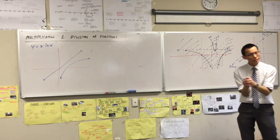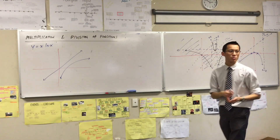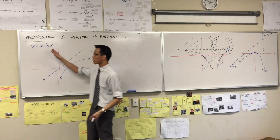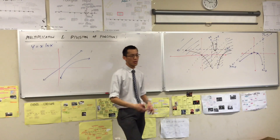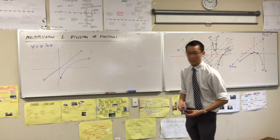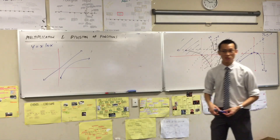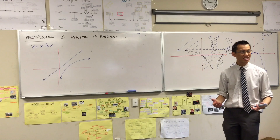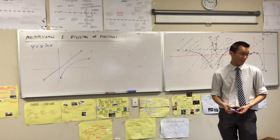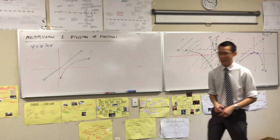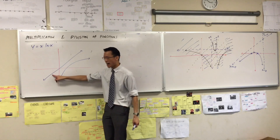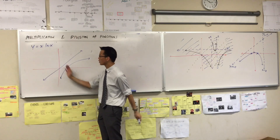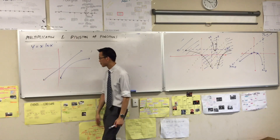Do you remember when we did addition and subtraction of functions? If you want the whole thing to exist, then all of the components also need to exist. So tell me what's happening for x less than zero. Answer: nothing is happening for x less than zero, because it's this guy times undefined. So therefore, you don't have to worry about that.